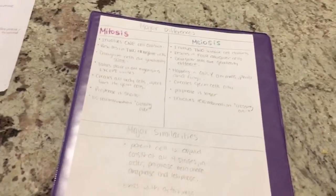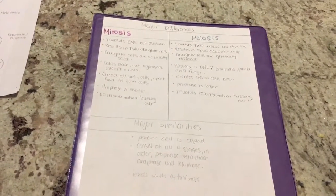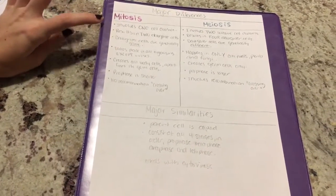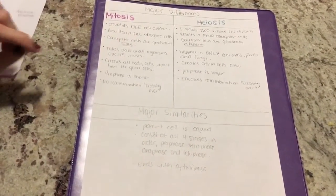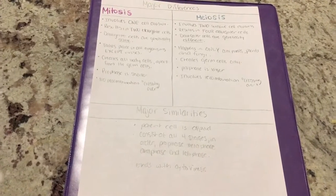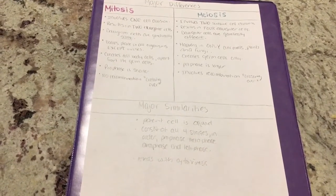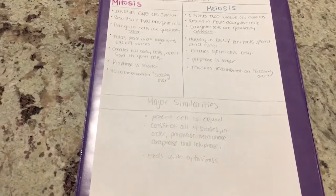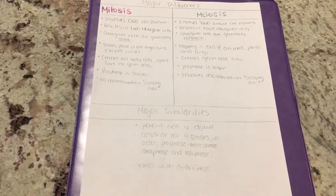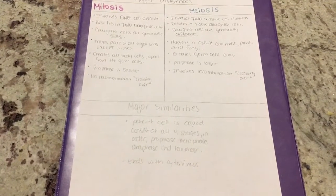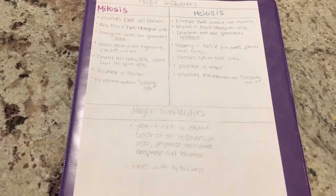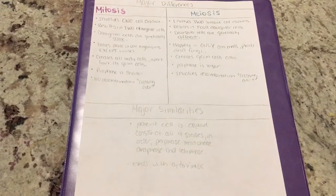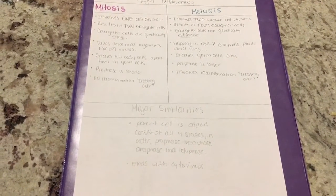Major differences between mitosis and meiosis — beginning with mitosis: it involves one cell division and results in two daughter cells. Daughter cells are genetically the same. It takes place in all organisms except viruses and creates all body cells apart from the germ cells. Prophase is shorter and there is no recombination or process of crossing over.